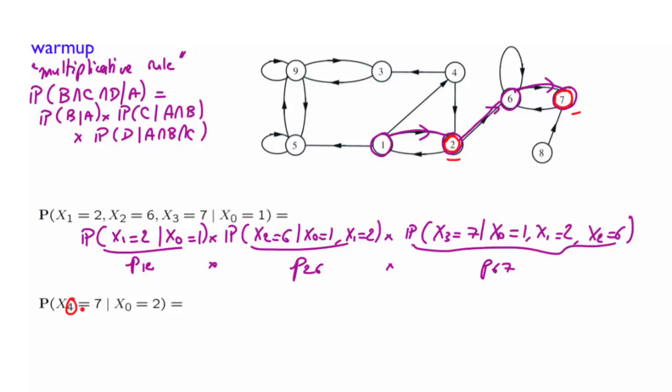So one possibility, you start here, and one possibility in one step transition is to go to 6. Then from 6 you go to 7, then from 7 you go back to 6, and then from 6 you again go to 7. So if we look and use the rule that we have developed before, it would be the probability of going to 6 times P₆₇ times P₇₆ times P₆₇. So this is one way of doing it.